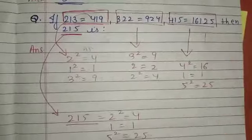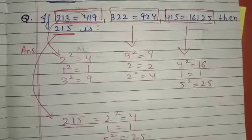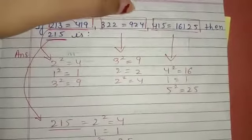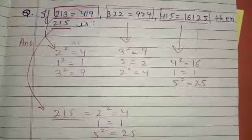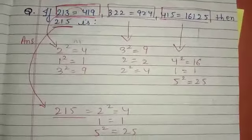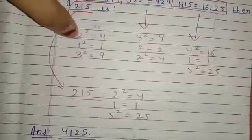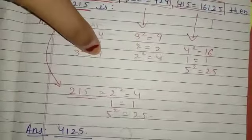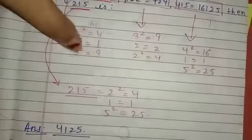First question: if 213 = 419, 322 = 924, 415 = 161025, then 215 = what? Let's see how to solve this. We take 2, 1, and 3 — 2 squared is 4, 1 squared is 1, 3 squared is 9. So 2²=4, 1²=1, 3²=9, giving us 419.